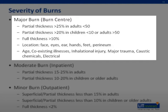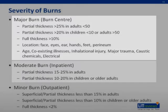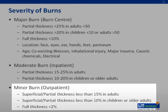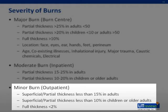Major burns are ideally managed in a specialized burn center. Moderate burns include partial thickness burns of 15% to 25% in adults, or 10% to 20% in children or older adults, and they generally require admission but do not need to be transferred to a burns unit unless special locations are involved or there are comorbidities. Minor burns include superficial or partial thickness burns less than 15% in adults, or 10% in children and older adults. Full thickness burns less than 2% may also be classified as minor unless involving special locations, and minor burns are usually managed as outpatients.